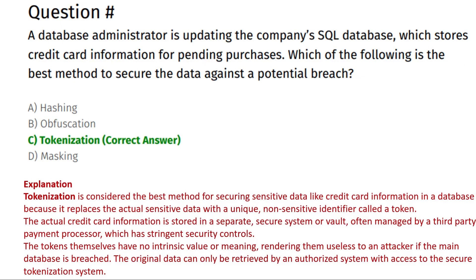The next question is: a database administrator is updating the company's SQL database which stores credit card information for pending purchases. Which of the following is the best method to secure the data against a potential breach? Option A: Hashing. Option B: Obfuscation. Option C: Tokenization. Option D: Masking. The correct answer is Option C, Tokenization.